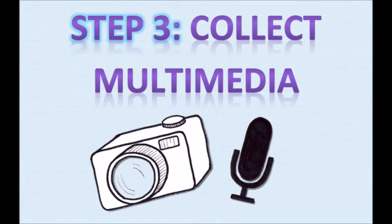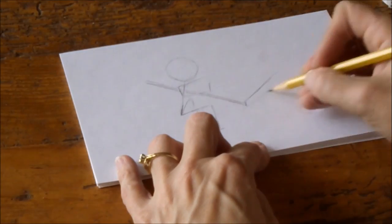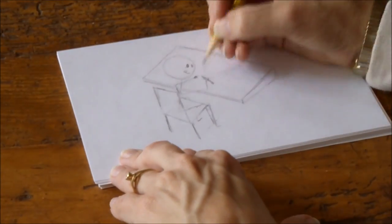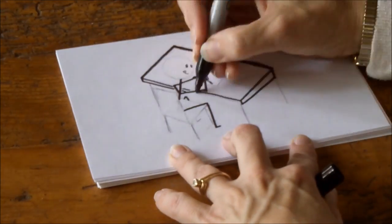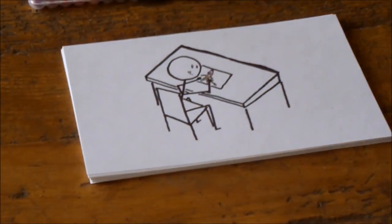Step 3: Collect Multimedia. First, let's look at the visuals. Most of the images that I use in my videos are my own artwork. After storyboarding, I create all of the drawings on blank 5x8 index cards based on the image ideas from the storyboard.